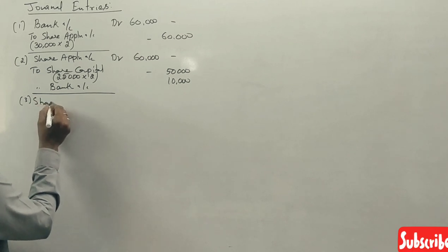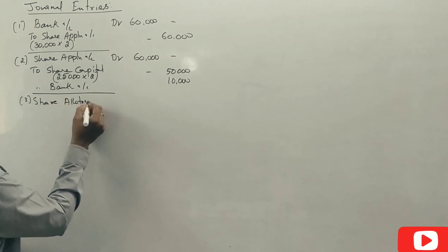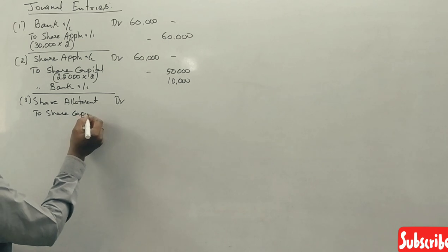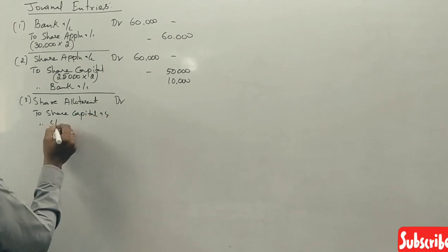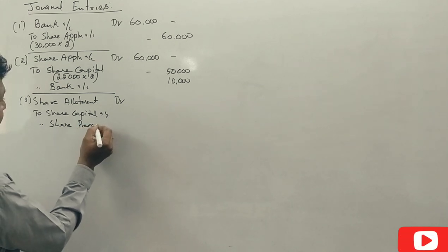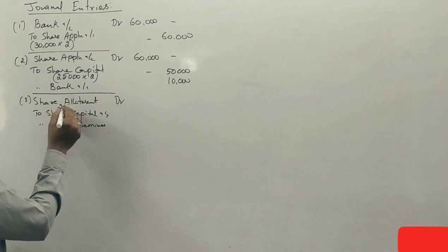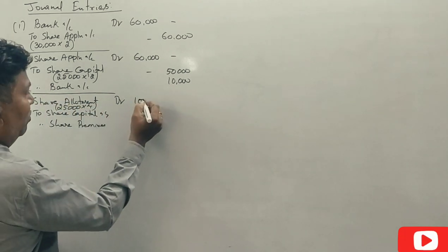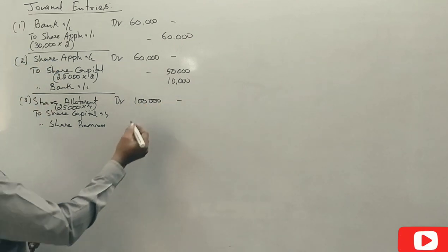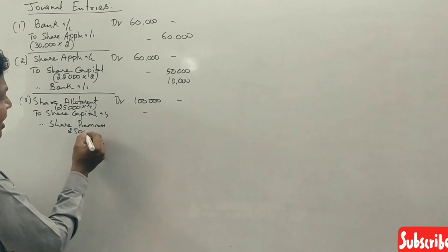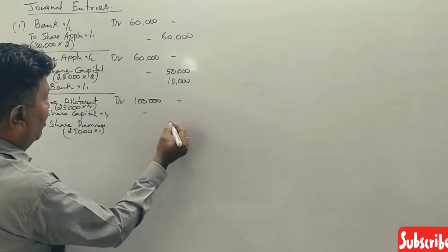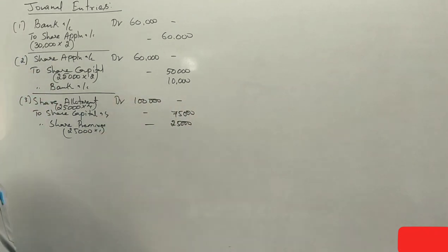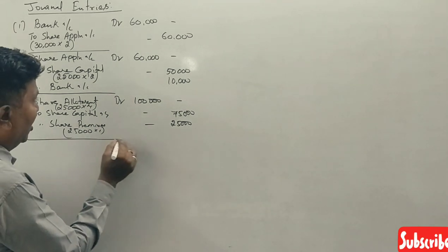For allotment: share allotment account debit, to share capital account, to share premium account. Share allotment account receives ₹4 per share, giving ₹75,000 in total share allotment money.